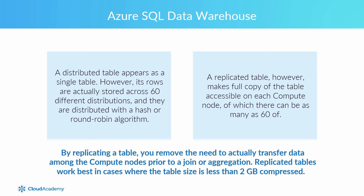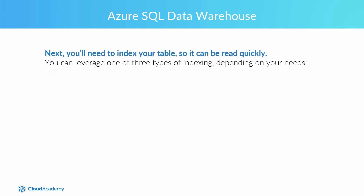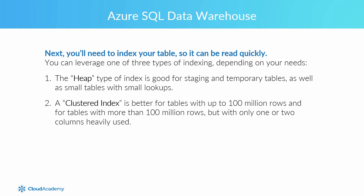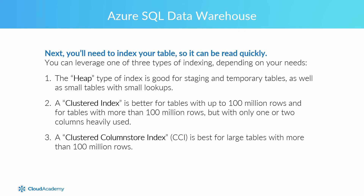Replicated tables work best in cases where the table size is less than 2GB compressed. Next, you'll need to index your table so it can be read quickly. You can leverage one of three types of indexing depending on your needs. The heap type of index is good for staging and temporary tables, as well as small tables with small lookups. A clustered index is better for tables with up to 100 million rows, and for tables with more than 100 million rows but with only one or two columns that are heavily used. A clustered column store index, or CCI, is best for large tables with more than 100 million rows.